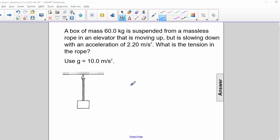A box of mass 60 kg is suspended from a massless rope in an elevator that is moving up but is slowing down with an acceleration of 2.2 m per second squared. What is the tension in the rope?